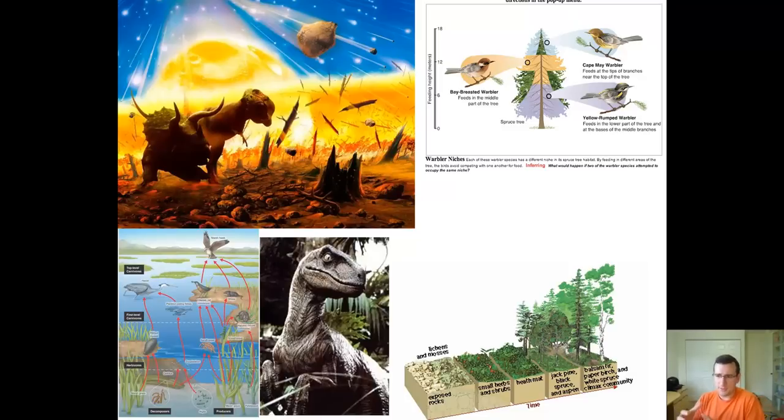And remember, of course, the mass extinctions will completely obliterate food webs and at the top of the food web are going to be the ones that are going to suffer the most and will be the first ones to go extinct.